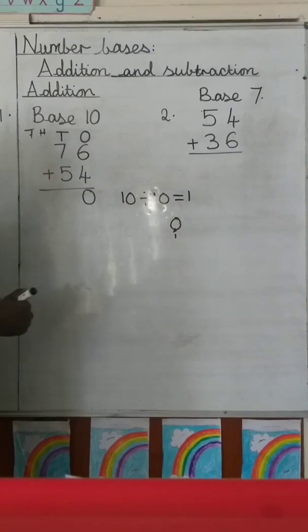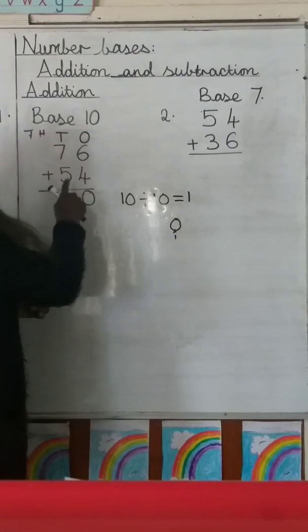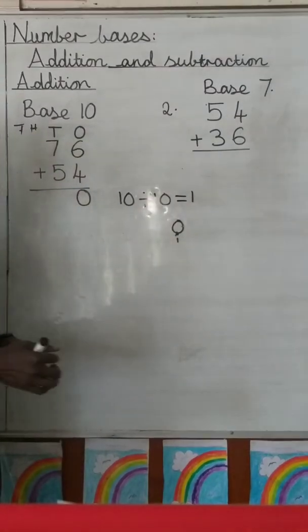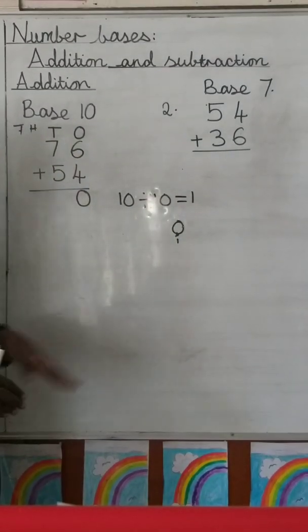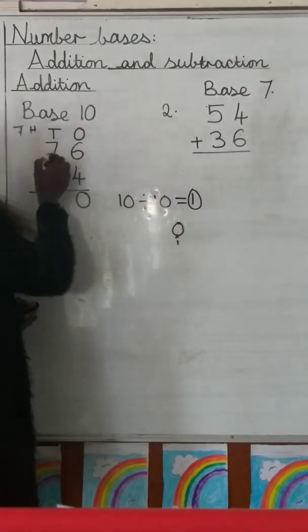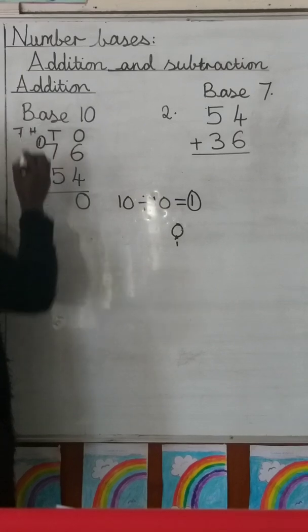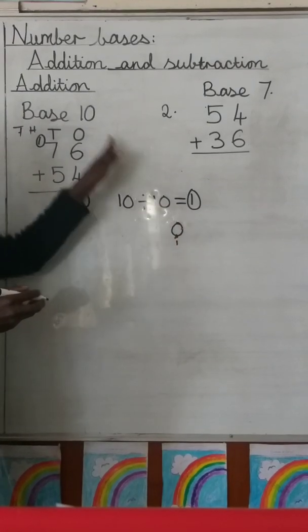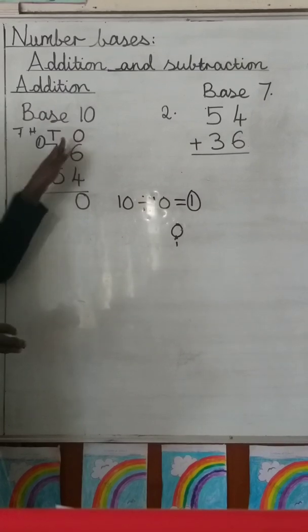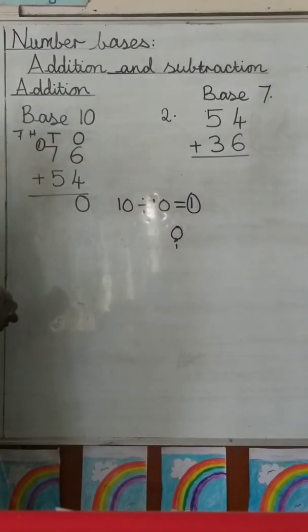After writing this zero, we move on to the tens. The quotient you got after dividing — which is 1 — you carry it to the tens column. It is 1 ten, that's why you are taking it to the tens.